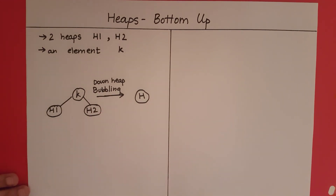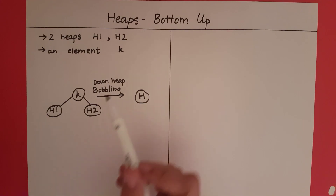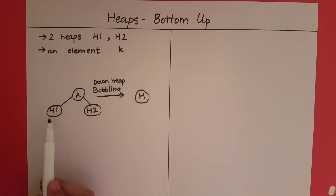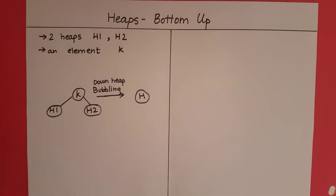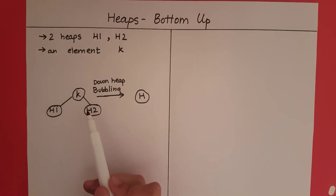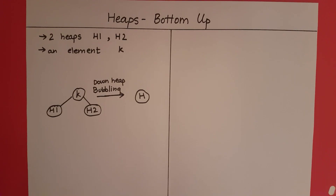Downheap bubbling was covered in the previous video when we talked about deletions from a heap. In this approach we are using two smaller sub-problem solutions — two smaller heaps — to arrive at a larger solution. This is basically the principle of recursion, and so it is intuitive that we use recursion to perform a bottom-up heap construction.